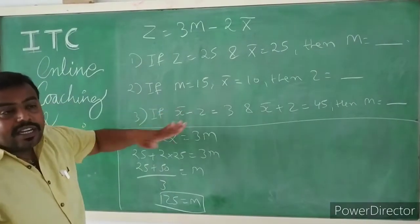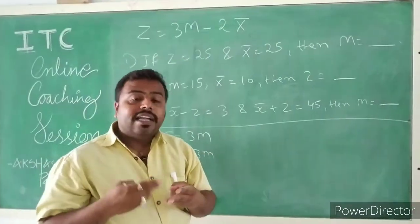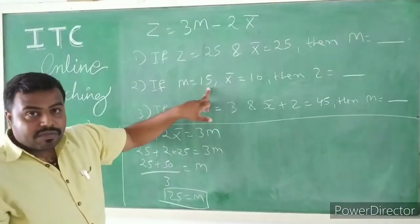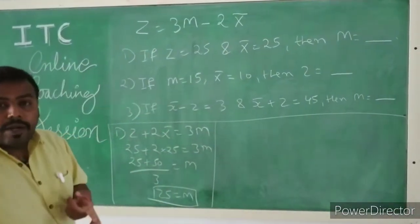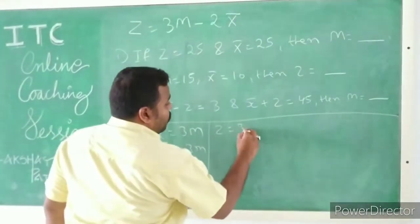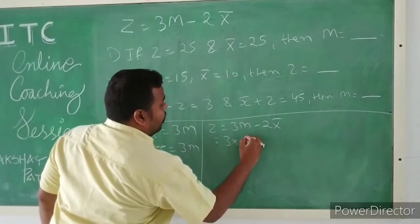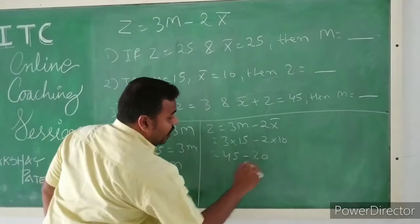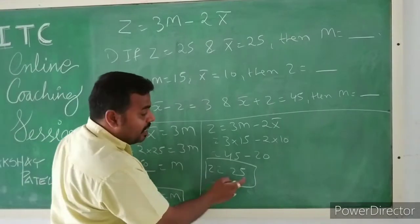In another question it is not always necessary that you will have values of Z and x̄. Values of either of these three parameters will be given. For example, in the second question: if median M = 50 and x̄ = 10, then Z is equal to what? Simply substituting: Z = 3×50 − 2×10 = 150 − 20 = 130. So Z equals 130.